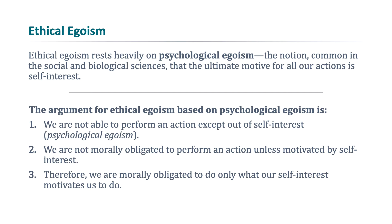Are there any truly altruistic acts where you're acting for the interest of someone else first? The ethical egoist says no — all of our actions are actually out of self-interest. The second premise is that we are not morally obligated to perform an action unless it's motivated by self-interest. The conclusion, therefore, is that we are morally obligated to do only what our self-interest motivates us to do. This is the argument for ethical egoism based upon psychological egoism.